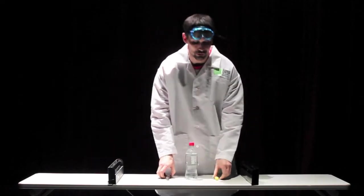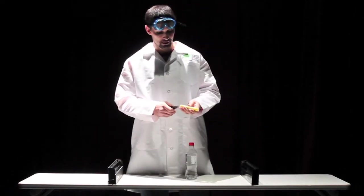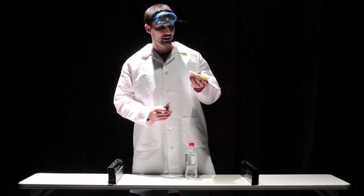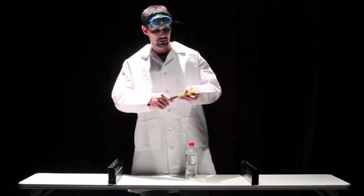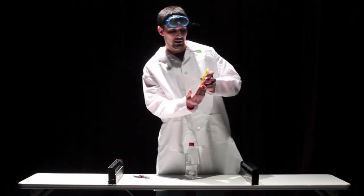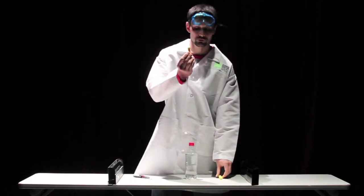The first thing you want to do when doing this experiment is grab your needle nose pliers and your yellow highlighter and remove the end from the yellow highlighter. And then take the ink tube out.